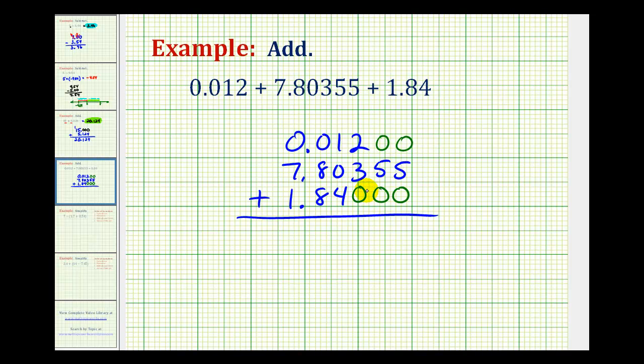And then before we add, we do want to bring the decimal point down into our sum. And now we can add as we normally would. So we'll have 5, 5, 5. This will be 5 again. And we have 16, carry a 1. 1 plus 7 plus 1 is 9.